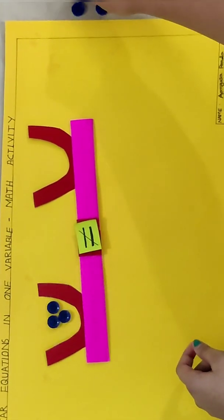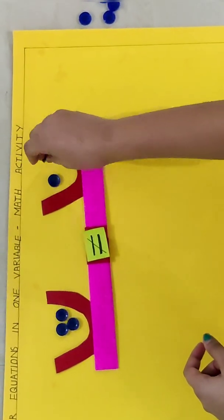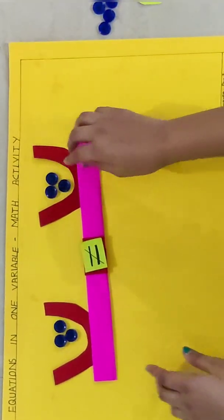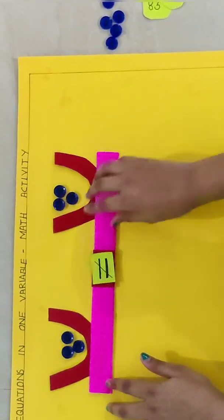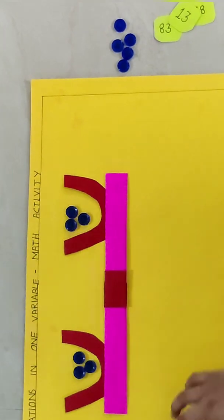So to make it equal, we have to add the same number of beads in the other side and it will become equal.